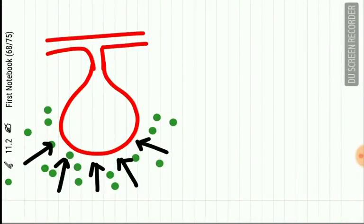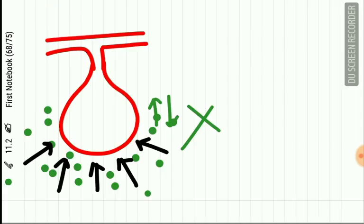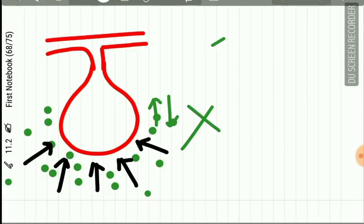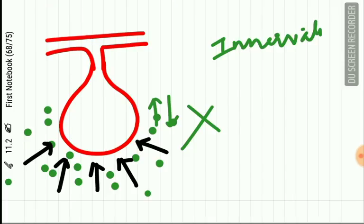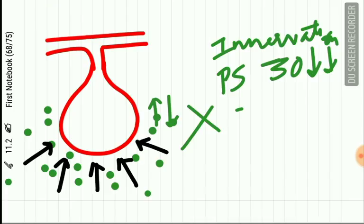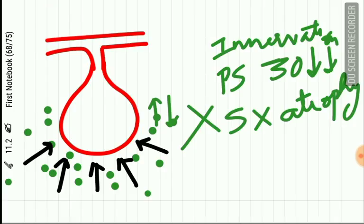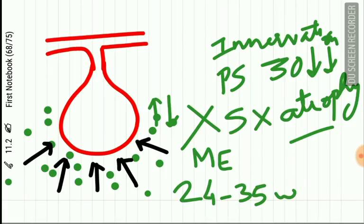It is very important for the mesenchyme and ectoderm to interact during salivary gland formation. Under experimental conditions, if these two are separated, salivary gland formation does not occur. If parasympathetic innervation is absent, gland size decreases by 30%; if sympathetic innervation is absent, there is also atrophy. The myoepithelial cells develop during 24 to 35 weeks of intrauterine life.